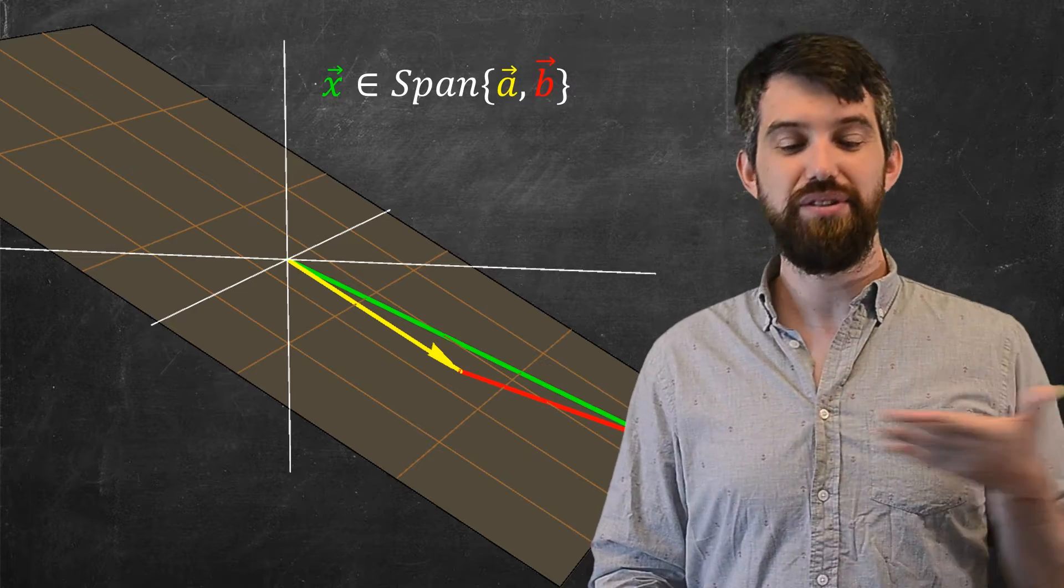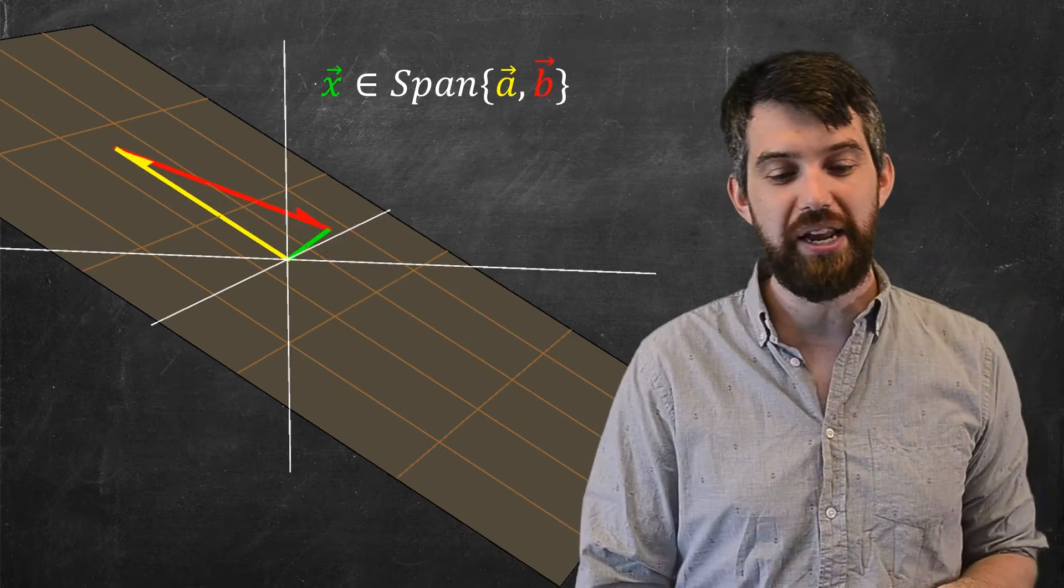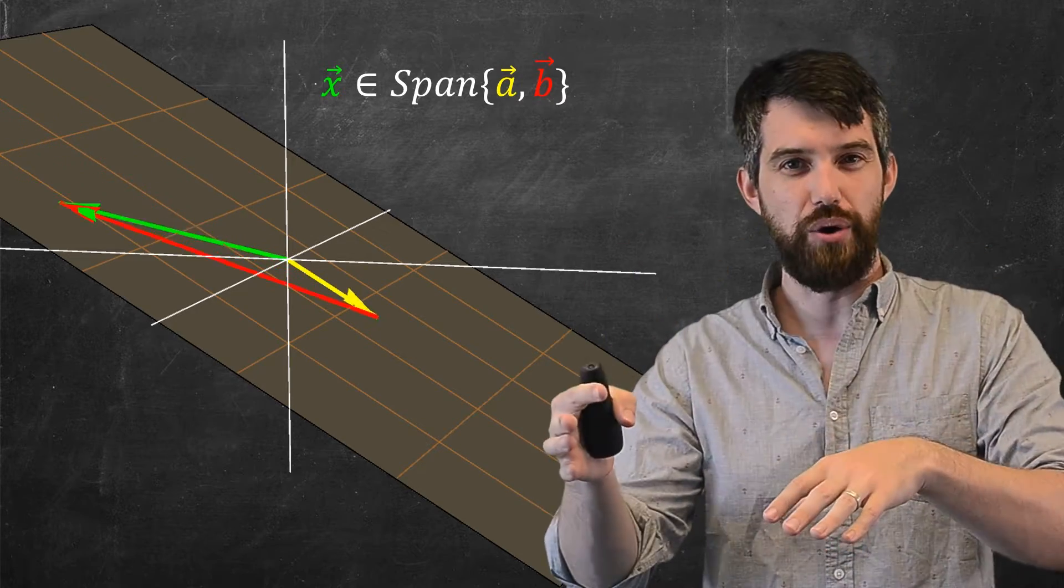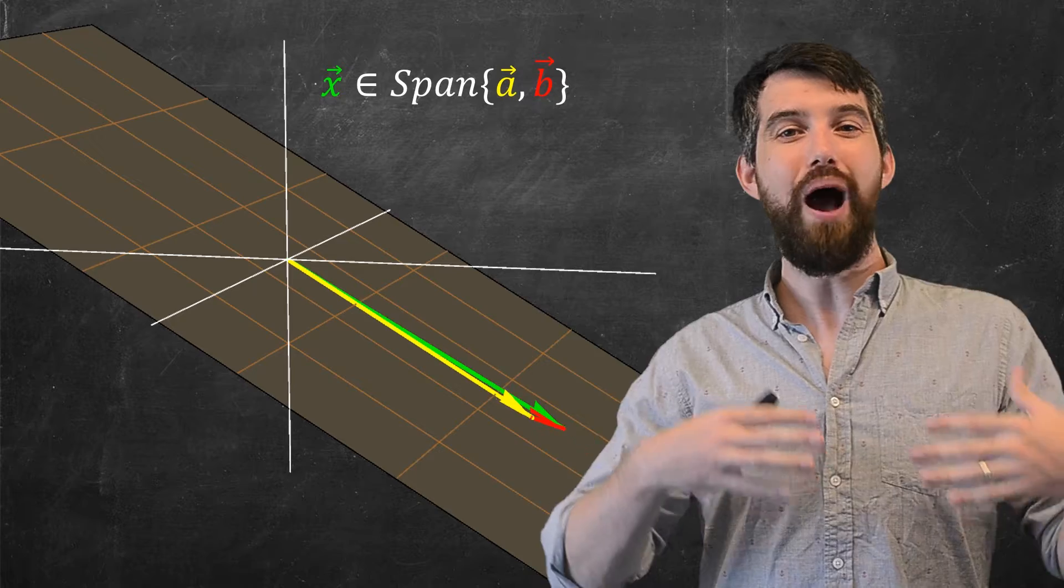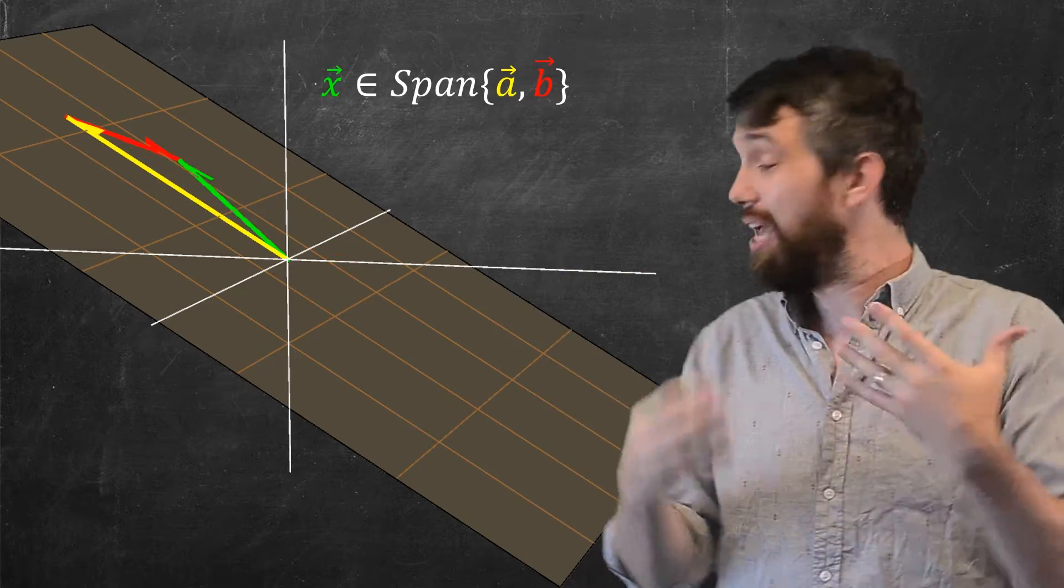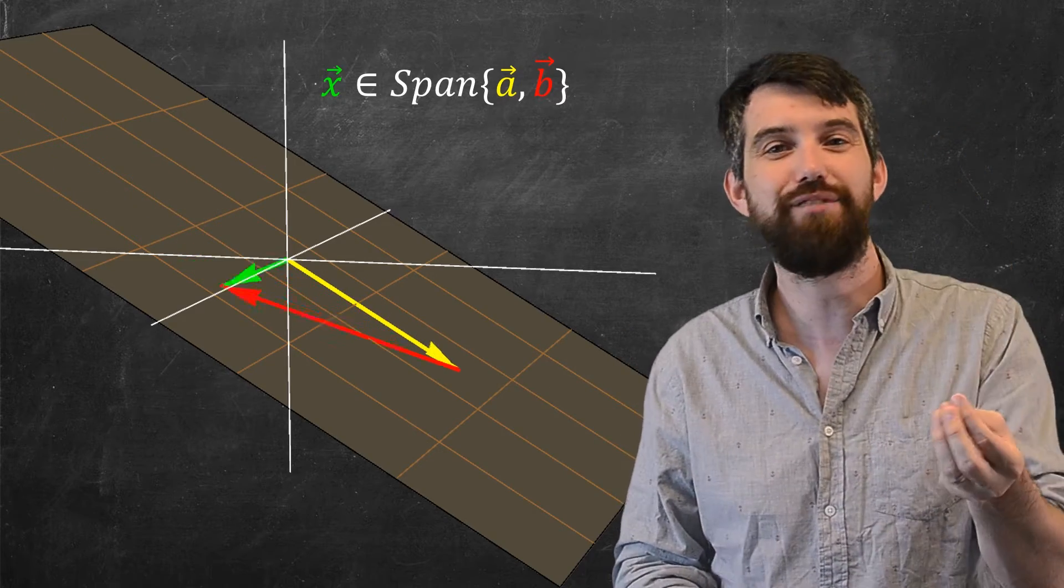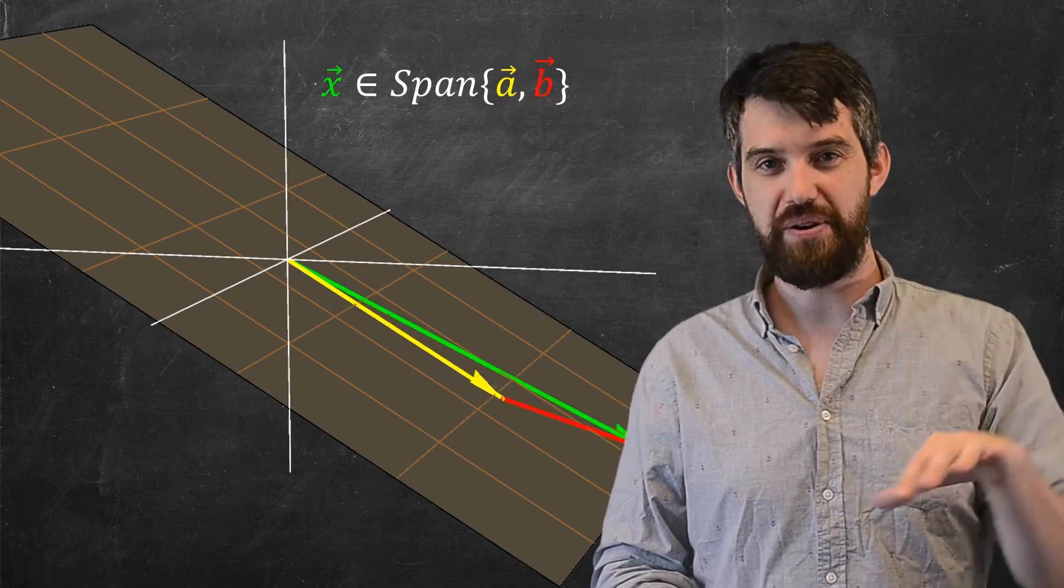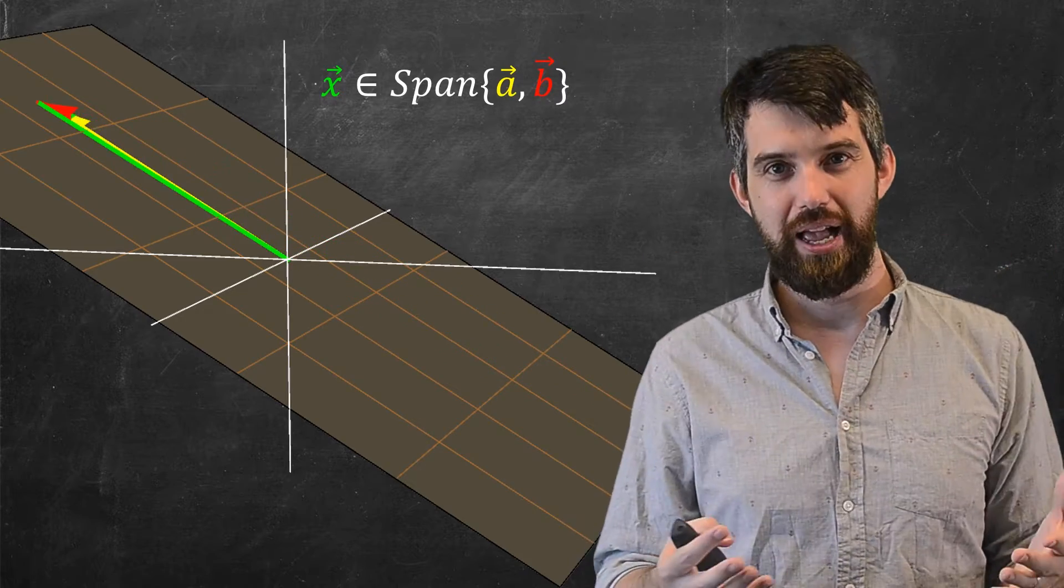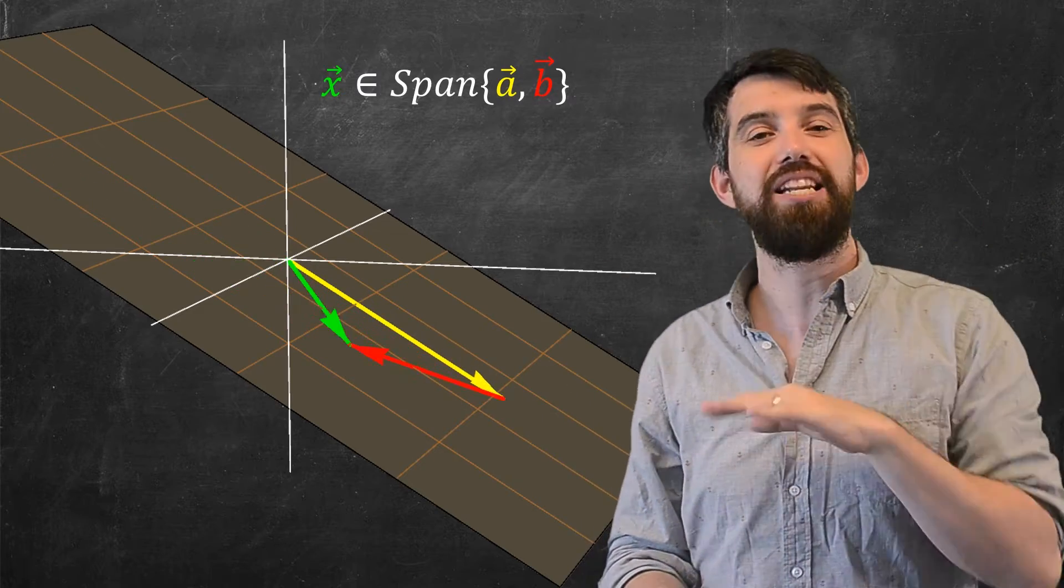And then I can imagine all the different x's that look like this. I'm just going to send my x all around this plane in a bunch of different ways. And what you can see is that wherever the x goes, I can add some multiple of A to some multiple of B. I might have to do some stretching, but some linear combination of the A and B is going to equal to this x vector no matter where the x vector is. So this is my sort of visual picture, that the span of two vectors sweeps out an entire plane.